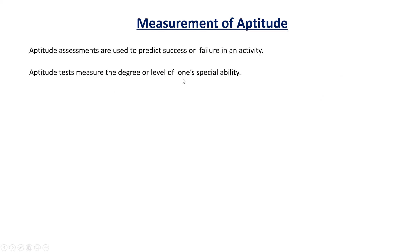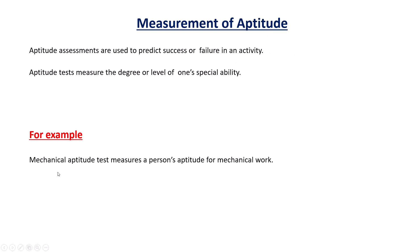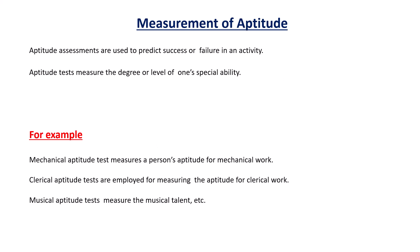Aptitude tests measure the degree or level of one special ability. Everybody has different special abilities — some persons are very talented in drawing, some in speaking, some in sports. To find that special talent we use measurement of aptitude or aptitude tests. For example, the mechanical aptitude test measures a person's aptitude for mechanical work, and the clerical aptitude test measures aptitude for clerical work.